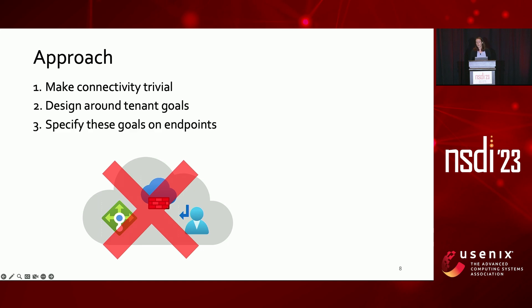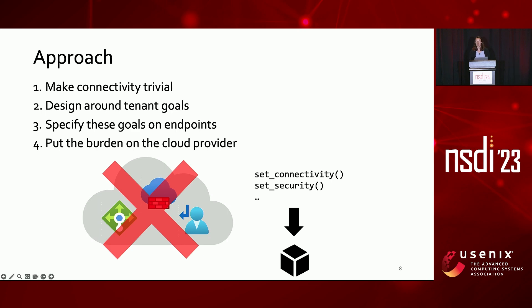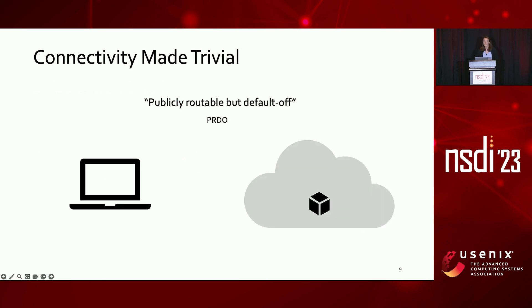These goals should be specified on endpoints, so that tenants don't have to consider the network itself, only what connectivity achieves for them between the resources they run—while it's the cloud provider's job to make it actually happen. To make connectivity trivial, we don't want endpoints stuck in private address spaces and virtual networks that we have to construct our way out of. Instead, we want endpoints to be routable from anywhere, but we don't want them to just be open to anything on the internet. Therefore, our desired semantics are what we call publicly routable but default off, or PRDO.